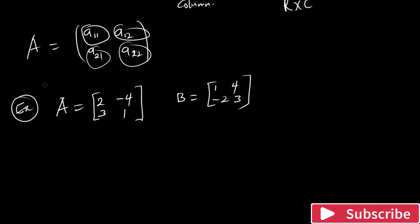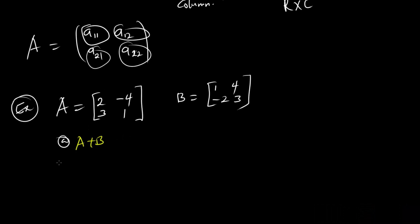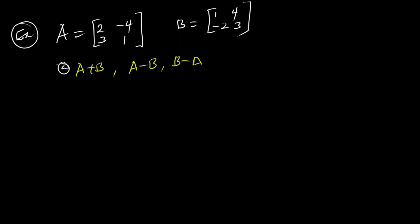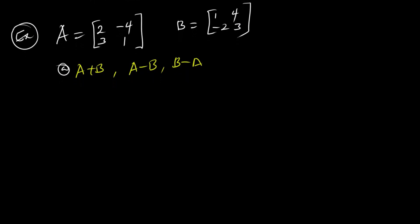We have to perform the following operations: find A plus B, A minus B, and B minus A. The first thing to note is that you cannot add or subtract matrices if the dimensions are not equal. If matrix A is a 3 by 3 matrix, matrix B also has to be a 3 by 3 matrix before you can add or subtract them. You cannot add or subtract two matrices of different dimensions — they have to be the same dimension.